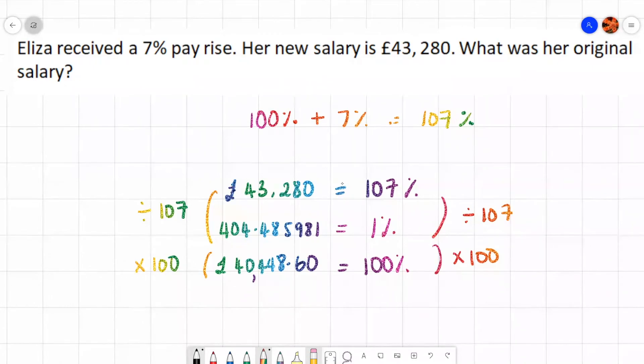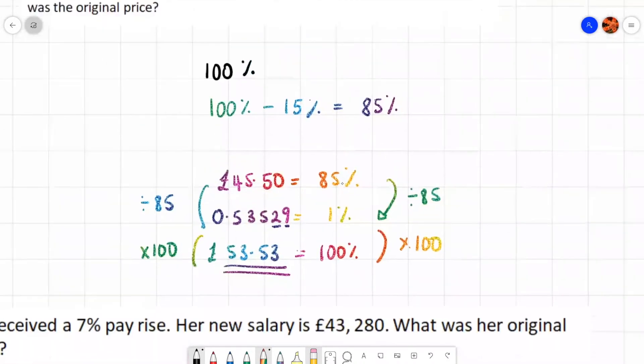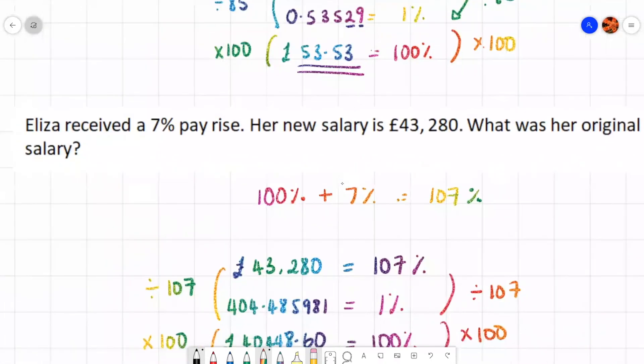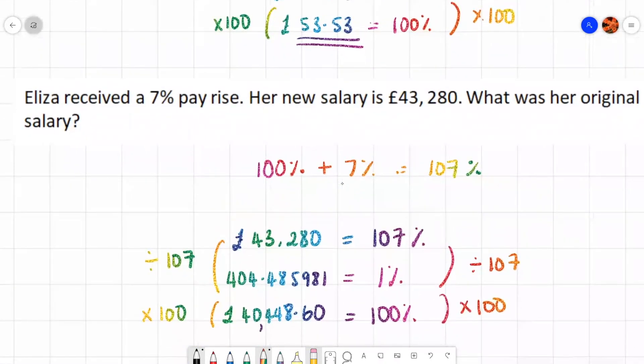And that's how we work out reverse percentages. If something's being reduced, like the above example, you're going to take away. So we did 100% take away 15% because it was reduced. But when something's being increased and we want to work out the original value, you add it on. Because this was a 7% pay rise, we did 100% plus 7%.